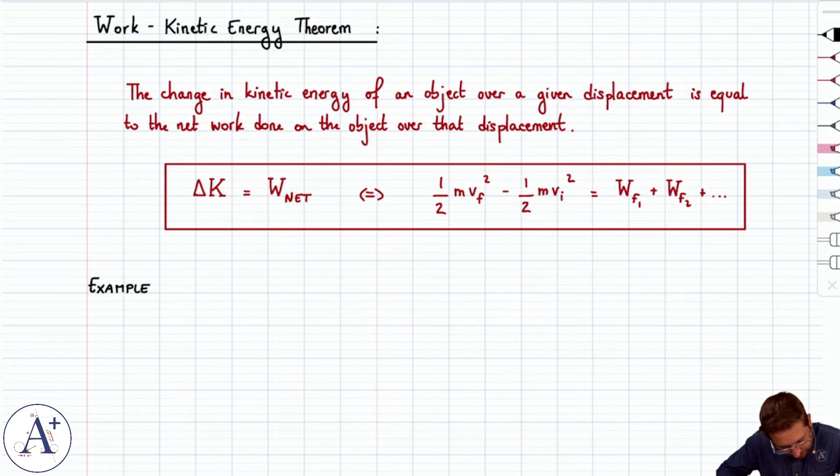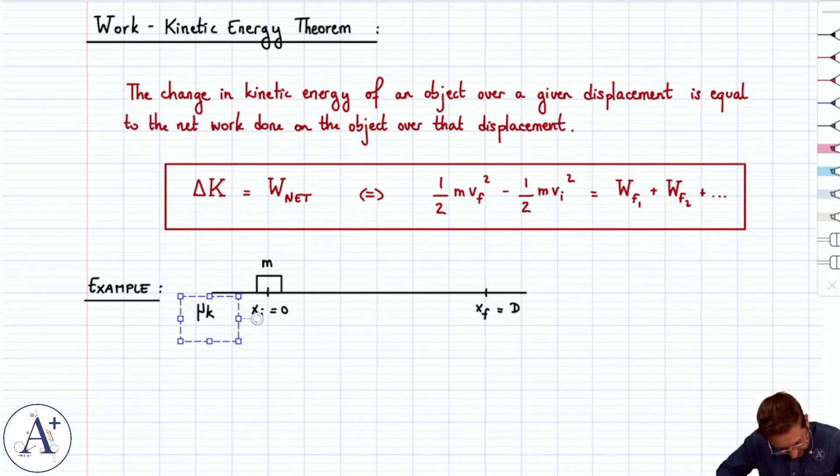We're going to take the example of a block that we're going to slide from x initial equals zero all the way to x final equals capital D, some distance D, and we're going to do that with a force F that's going to pull to the right. And we're going to include actually friction here to make things a little bit more entertaining. So, we're going to have a mass m, there's going to be a coefficient of kinetic friction mu k.